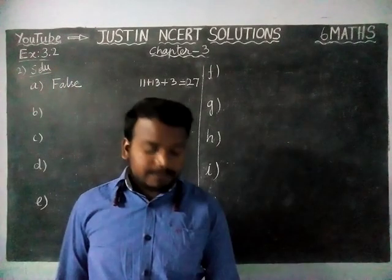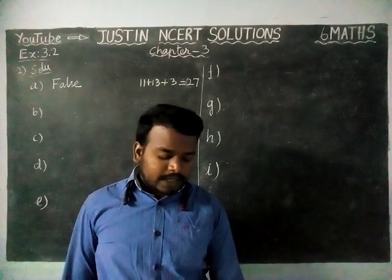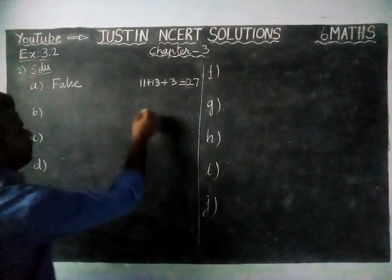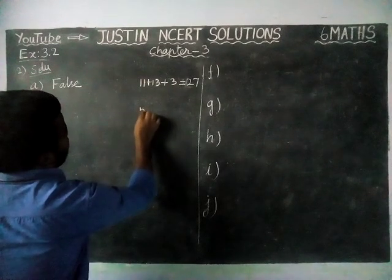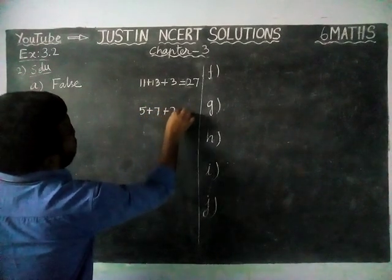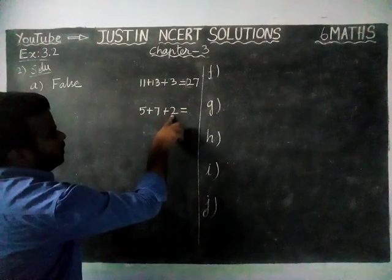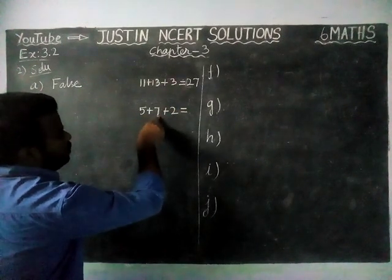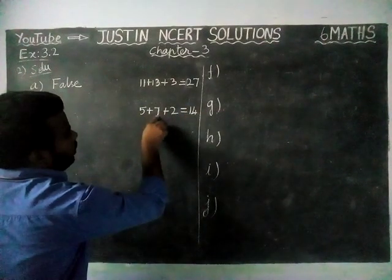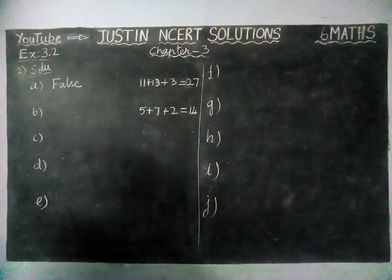Option B: the sum of 2 odd numbers and 1 even number is even. We will take 5 plus 7 plus 2. 5 and 7 are odd numbers, 2 is the even number. 5 plus 7 is 12, and 12 plus 2 is 14. The sum of 2 odd numbers and 1 even number gives an even number, so this statement is true.